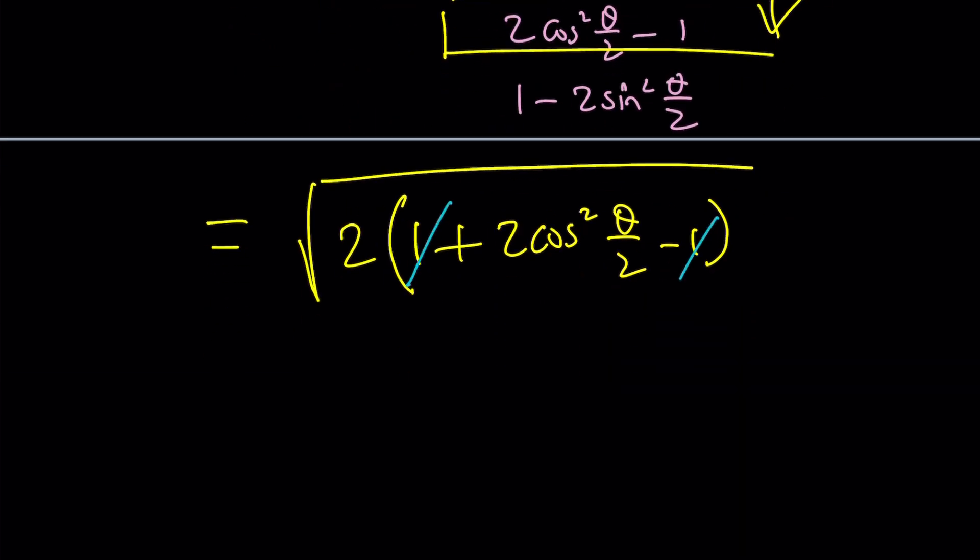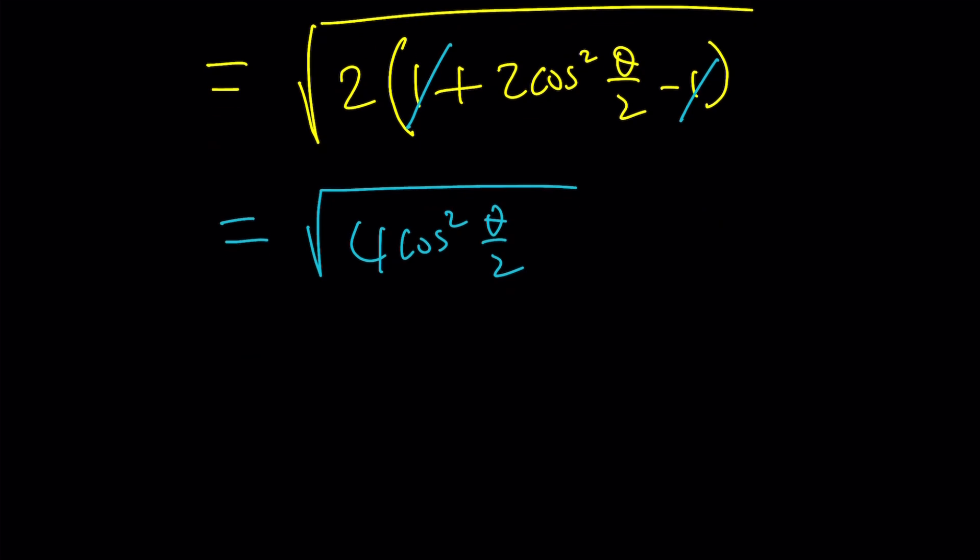Each two cancel out, leaving us with four cosine squared theta over two. Of course, we're going to make some assumptions here. Let's say we're in the first quadrant. I mean, we don't have to be. And obviously, other quadrants you can evaluate accordingly. But I'm just going to want to keep it simple. And this is the absolute value, but I'm going to go with the positive solution two cosine theta over two. And that's the answer.